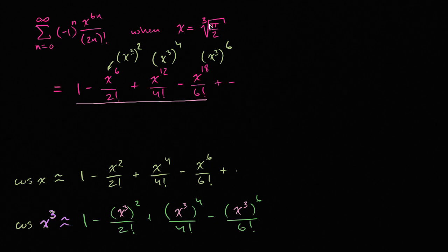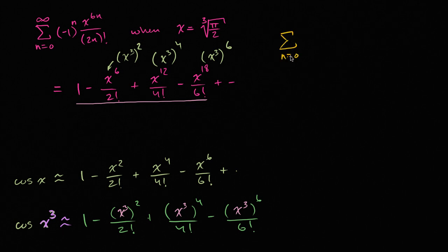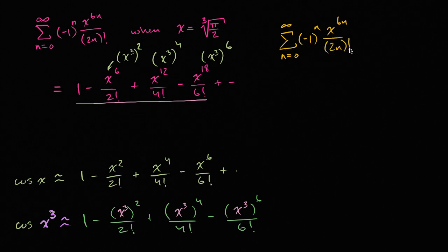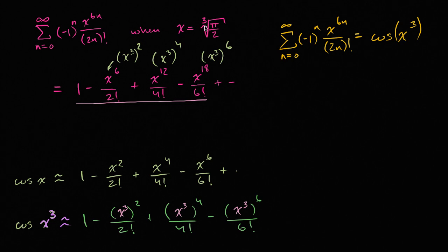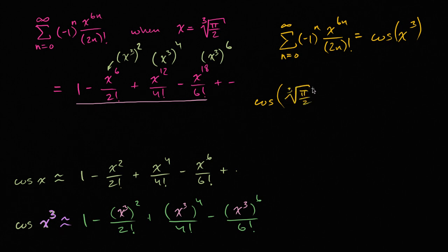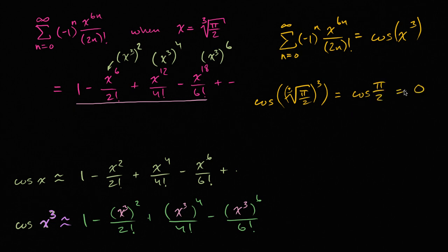So evaluating this when x equals the cube root of pi over two is the same as evaluating cosine of x cubed at x equals the cube root of pi over two. The cosine of the cube root of pi over two, raised to the third power, is just cosine of pi over two — because cubing a cube root gives you back pi over two. And cosine of pi over two equals zero. We are done.